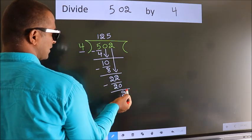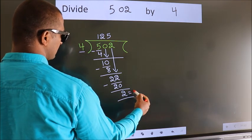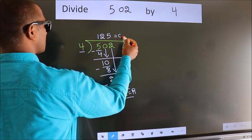No more numbers to bring down. So we stop here. This is our remainder. This is our quotient.